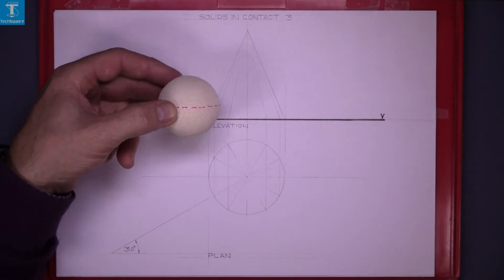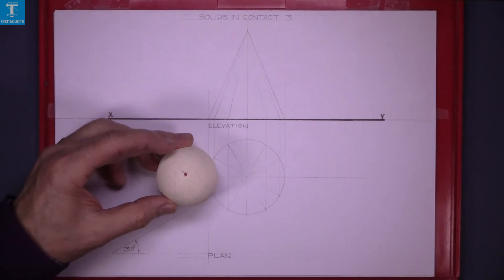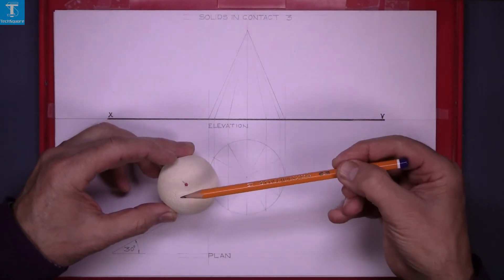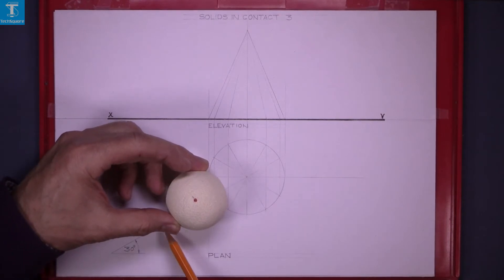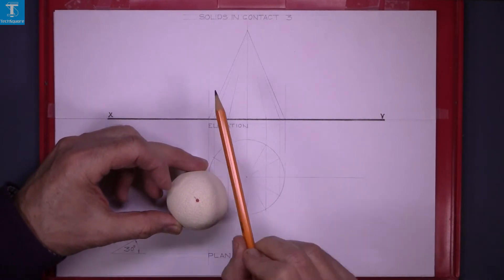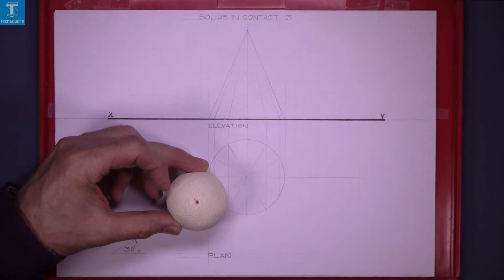Project the plan, get the plan in this position and then using the centre of the cone rotate it around until its centre is directly over this 30 degree line and then project the elevation of it in this new location.